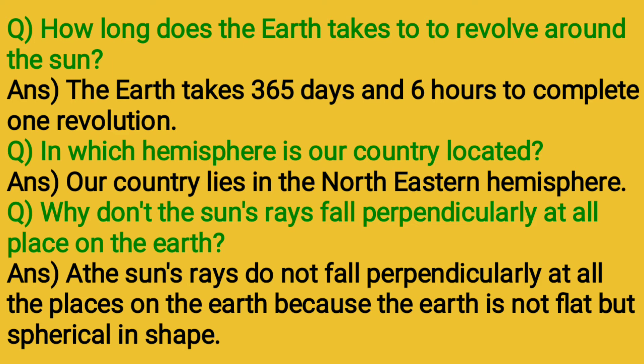Question: Why don't the sun's rays fall perpendicularly at all places on the Earth? Answer: The sun's rays do not fall perpendicularly at all places on the Earth because the Earth is not flat but spherical in shape.